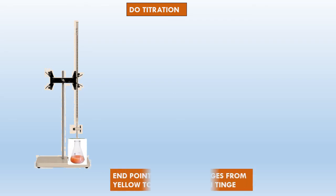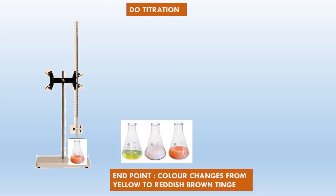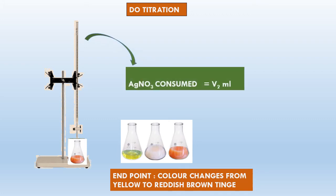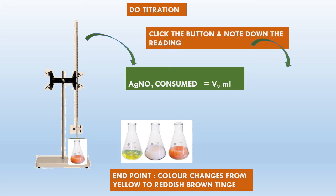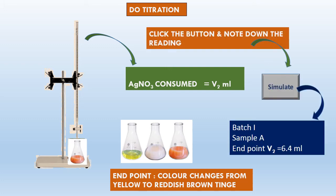The endpoint is color change from yellow to reddish brown tinge. Let us note down AgNO₃ consumed as V2 ml. We have 5 sample waters, so let us simulate and get the 5 sample values. Batch 1 students: your endpoint on simulation is 6.4 ml — Sample A, V2 = 6.4 ml.